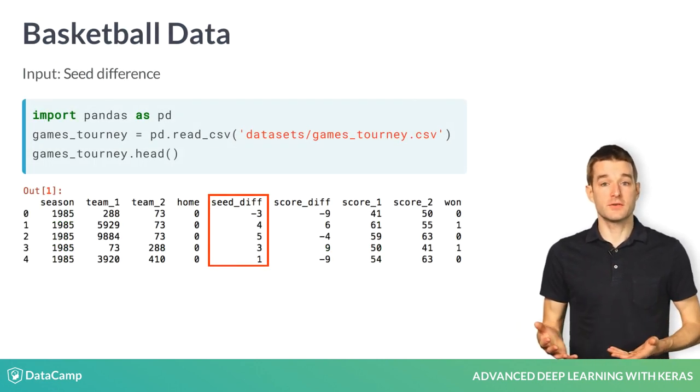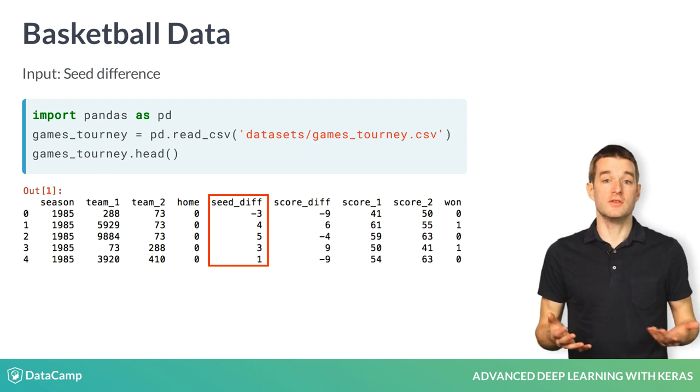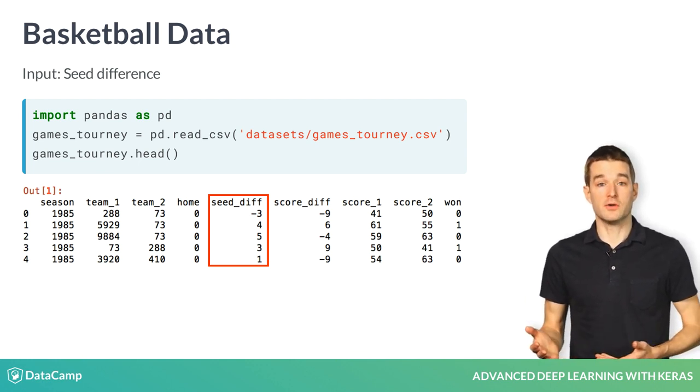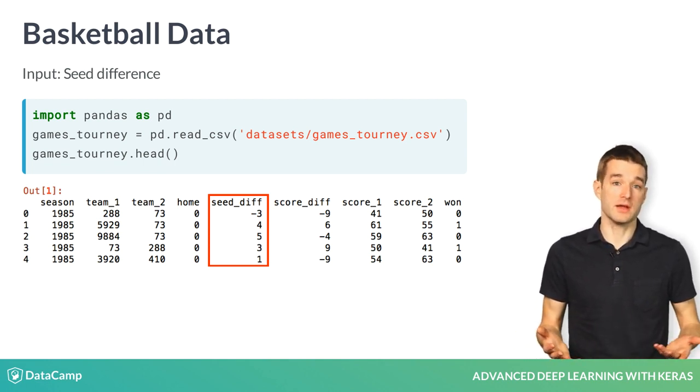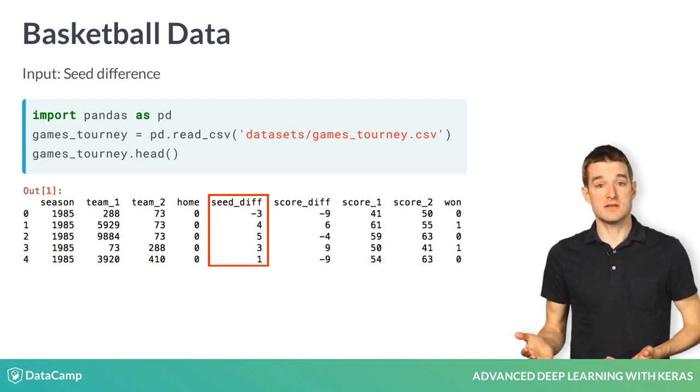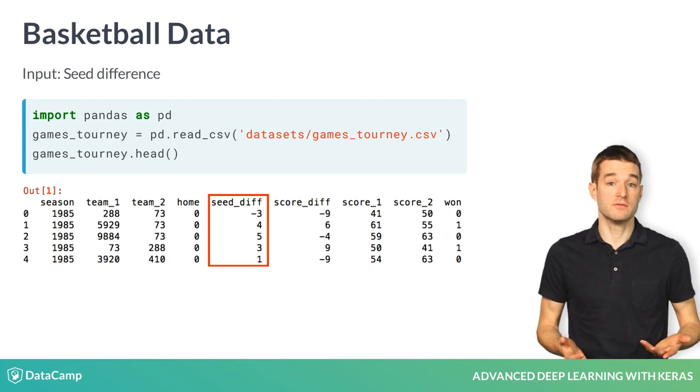Your input will be the difference in seed between the two teams. For example, if a 7 seed plays a 10 seed, their seed difference is 7 minus 10, or negative 3. If an 11 seed plays a 7 seed, their seed difference is 11 minus 7, or 4.